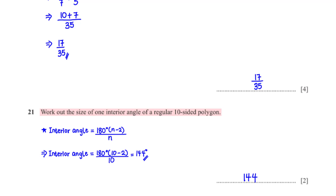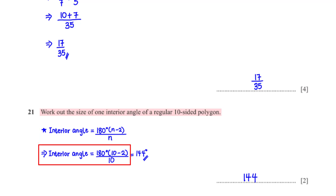Work out the size of one interior angle of a regular 10-sided polygon. Using the formula for the interior angle of a regular polygon, where n is the number of sides, we plug in n equals 10. This gives us 144 degrees.